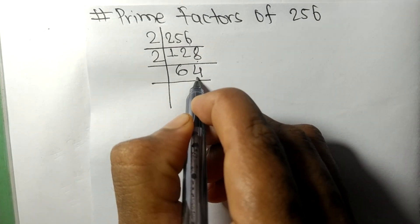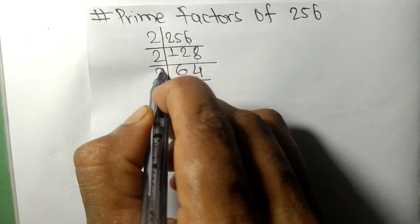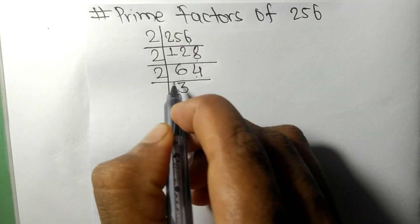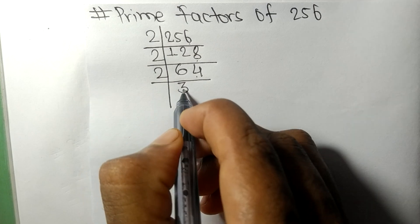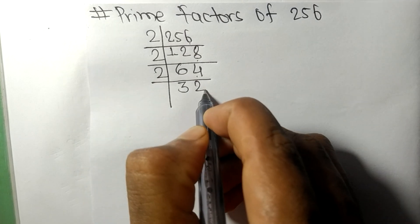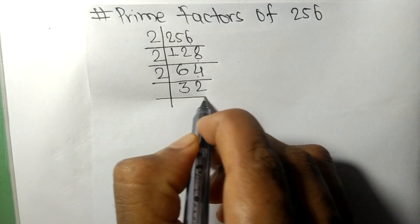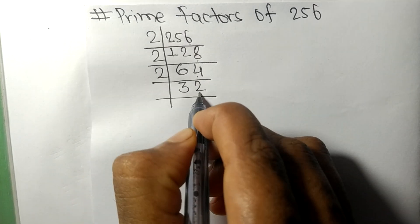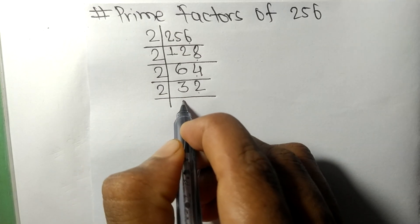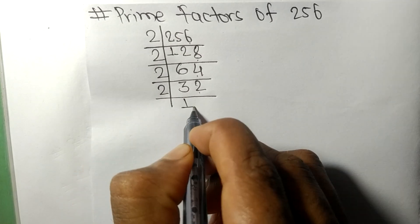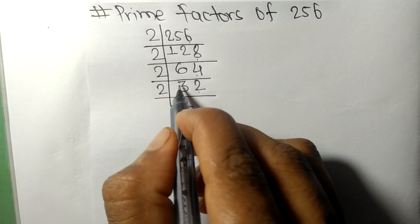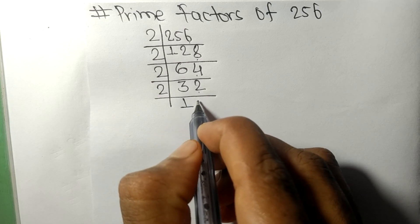Again we have even number four, so it is divisible by 2. Two times three is six, two times two is four. Again even number two, so divisible by 2. Two times one is two, with remainder one — giving us twelve.